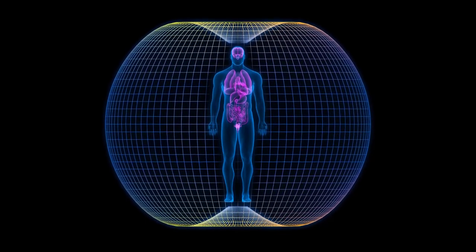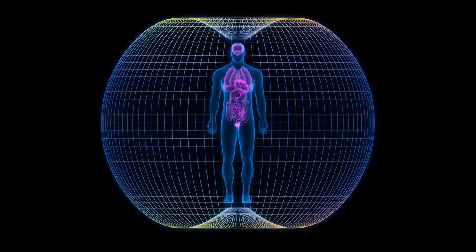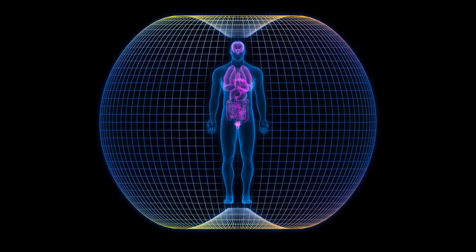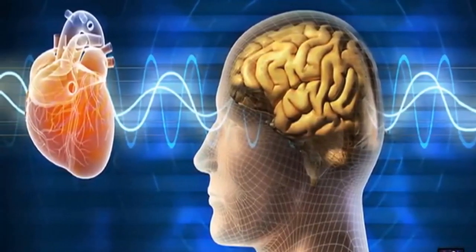Biological encoding of information occurs at every level of our being, from the cellular to the systemic. The heart's rhythmic patterns synchronize with hormonal pulses and neural oscillations, encoding emotional information that permeates our internal and external environments.